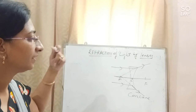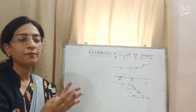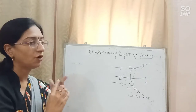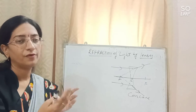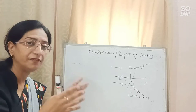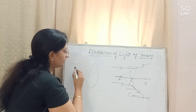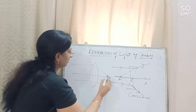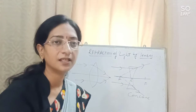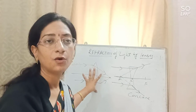Now we need to find out how different images are formed by the two lenses. For the convex lens, we look at how the image is formed when the object is placed at the focus, between the focus and the pole, beyond 2F, or when rays are coming from infinity. Six images can be formed for convex lenses.